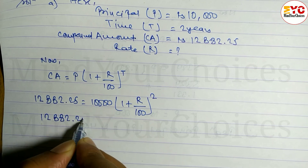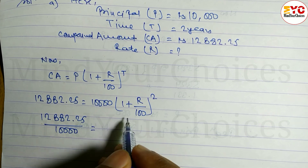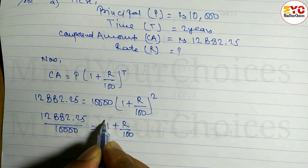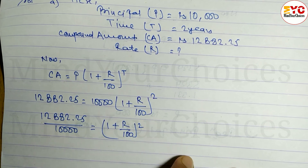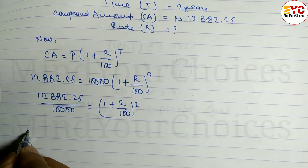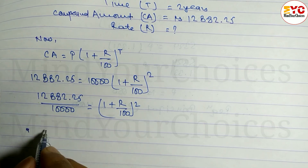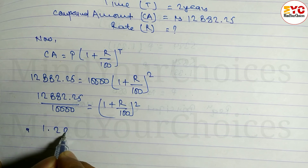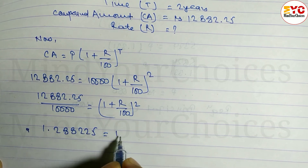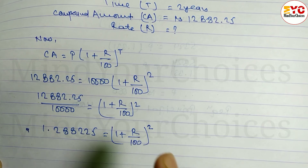Divide both sides: 12882.25 divided by 10000 is equal to (1 + r divided by 100) squared. That gives 1.288225 is equal to (1 + r divided by 100) whole squared.